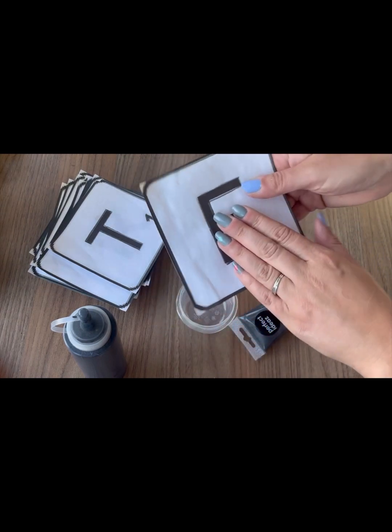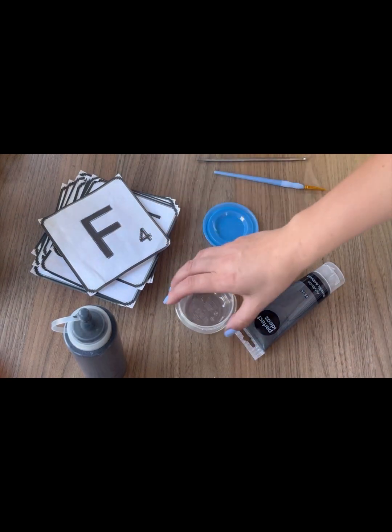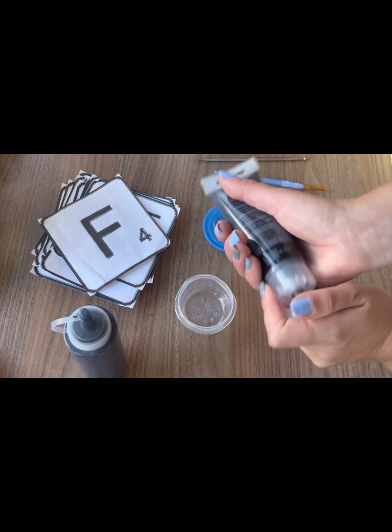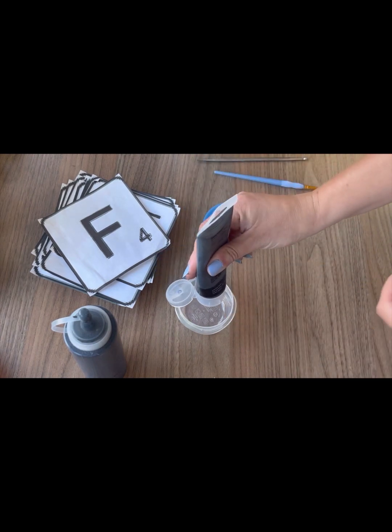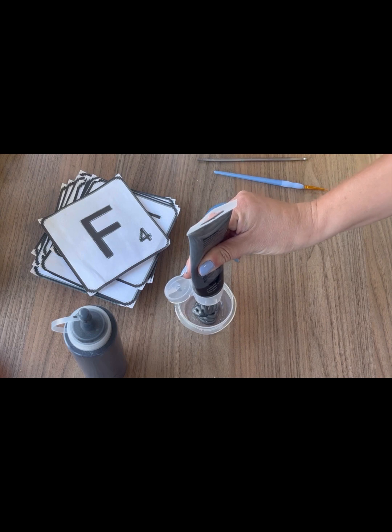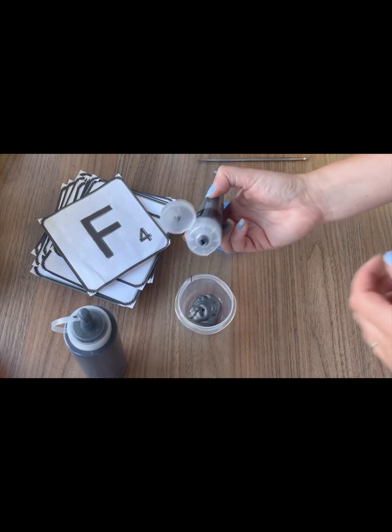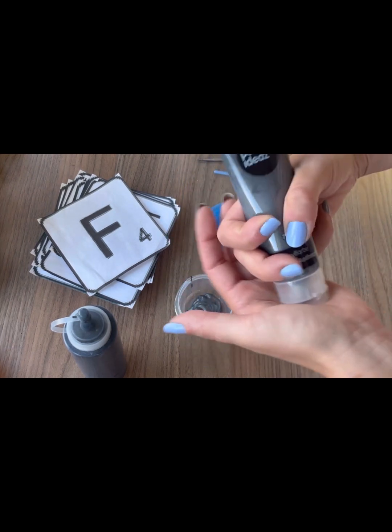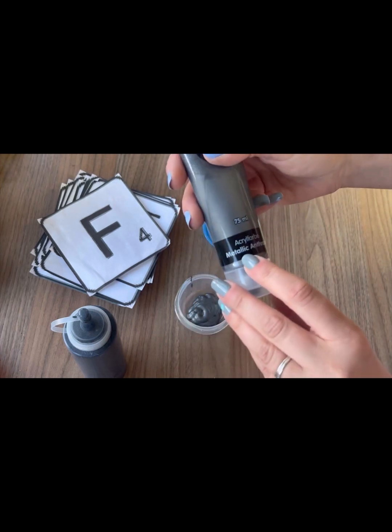What I would like to do is I would like to paint the letters in a kind of dark silver come graphite kind of color. So I've got this, it's from Perfect Ideas and it's a metallic anthracite.